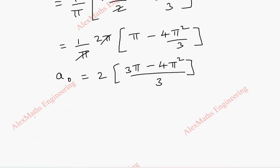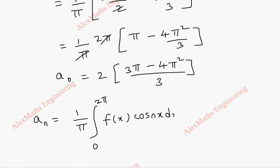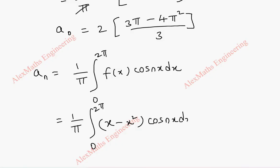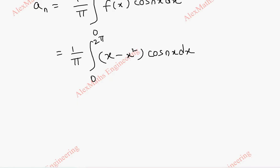Next we are going to find aₙ, which is (1/π) integral from 0 to 2π of f(x) cos(nx) dx. We are going to use Bernoulli's formula for integration, where u = x minus x² and v = cos(nx).